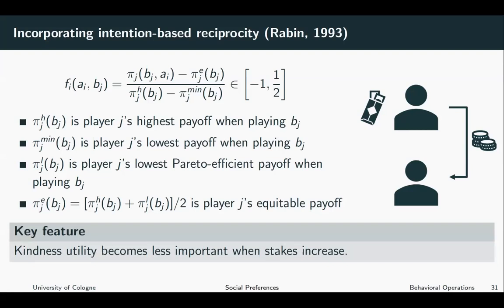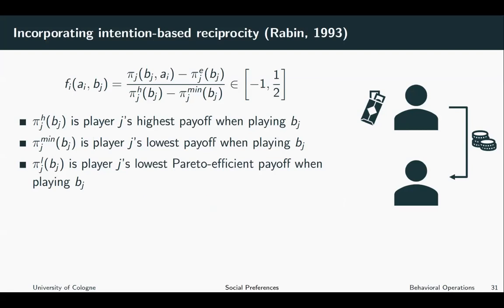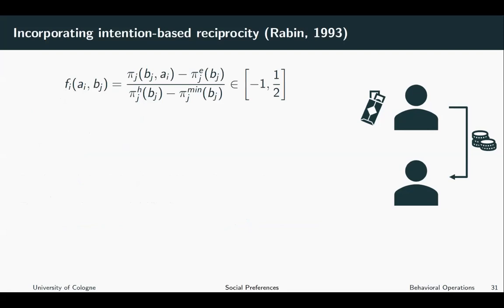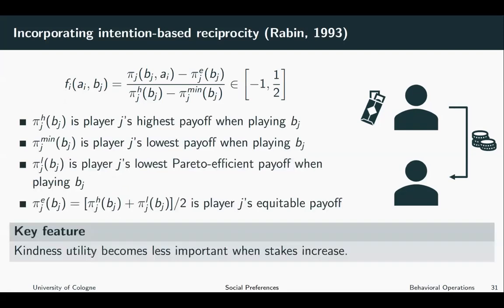One important feature is that kindness is always bounded between minus one and plus one half. This means that the monetary payoff enters in absolute terms, so if the absolute stake size increases, these kindness expressions — which are always between minus one and plus one half — play a smaller and smaller role. So this function tells us how kind my own behavior is.